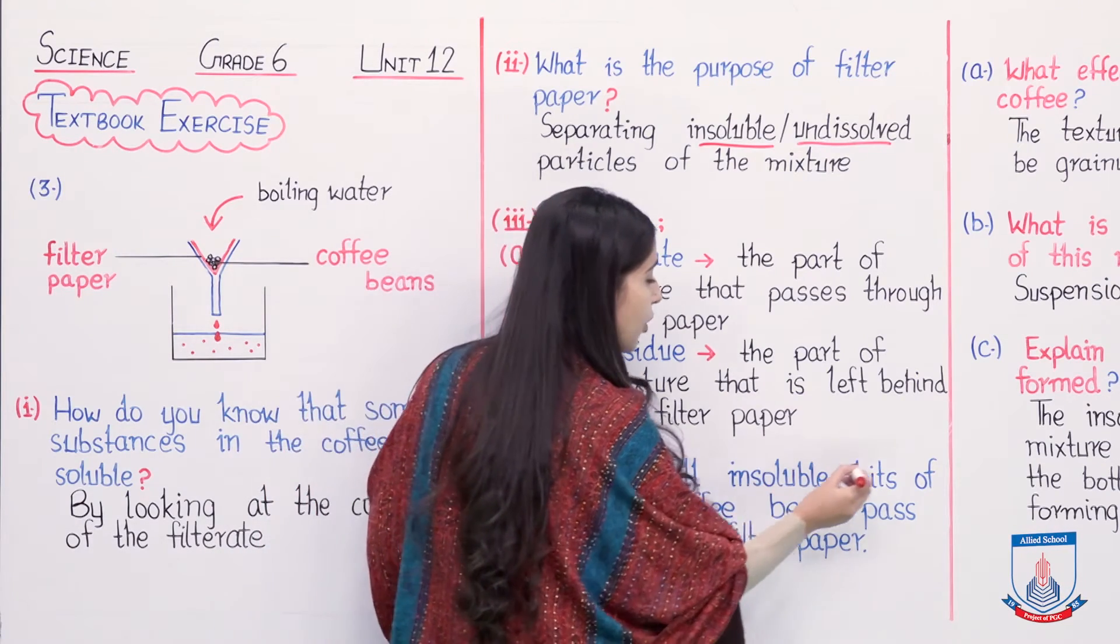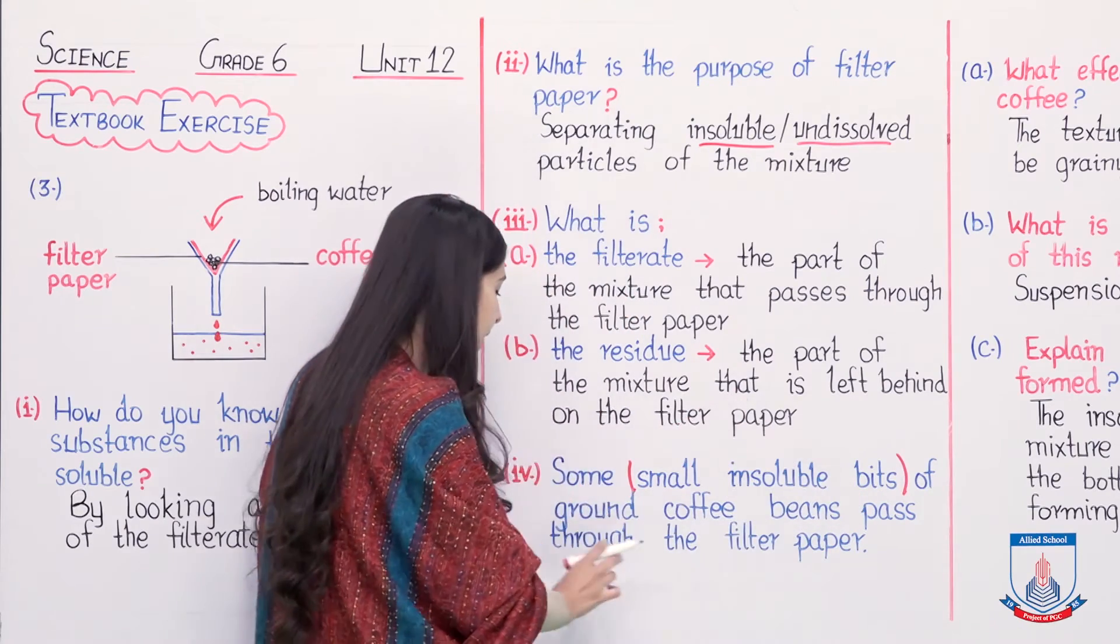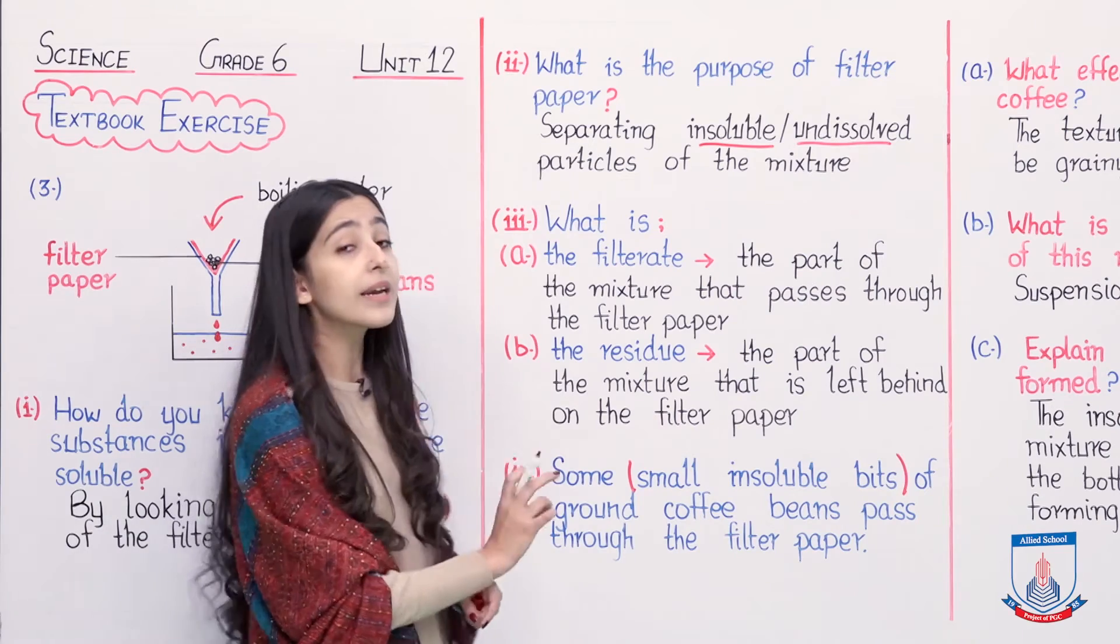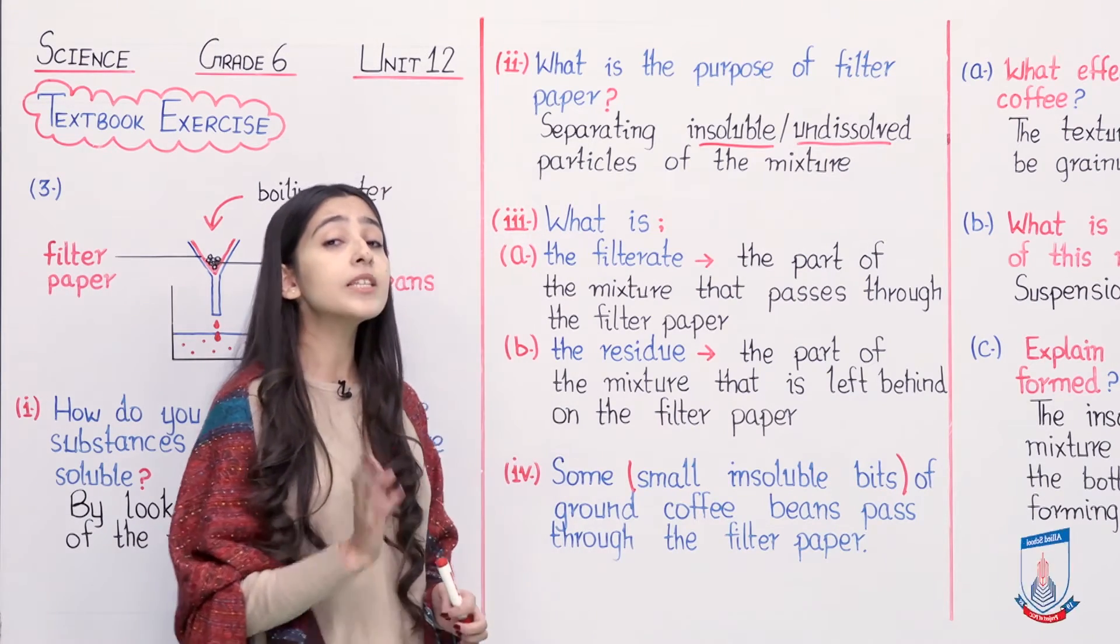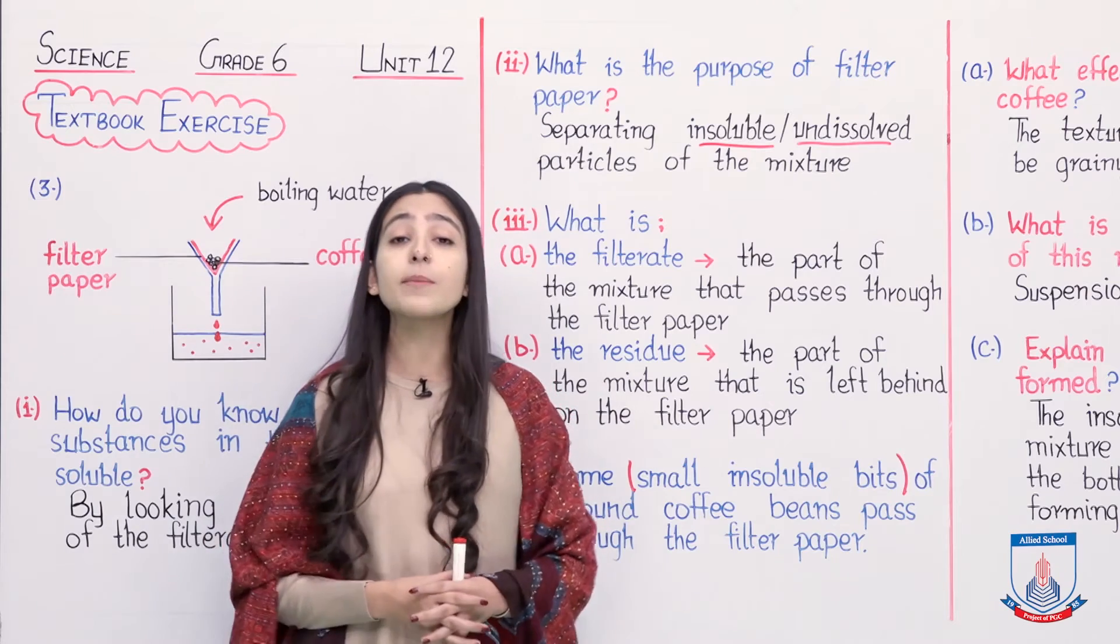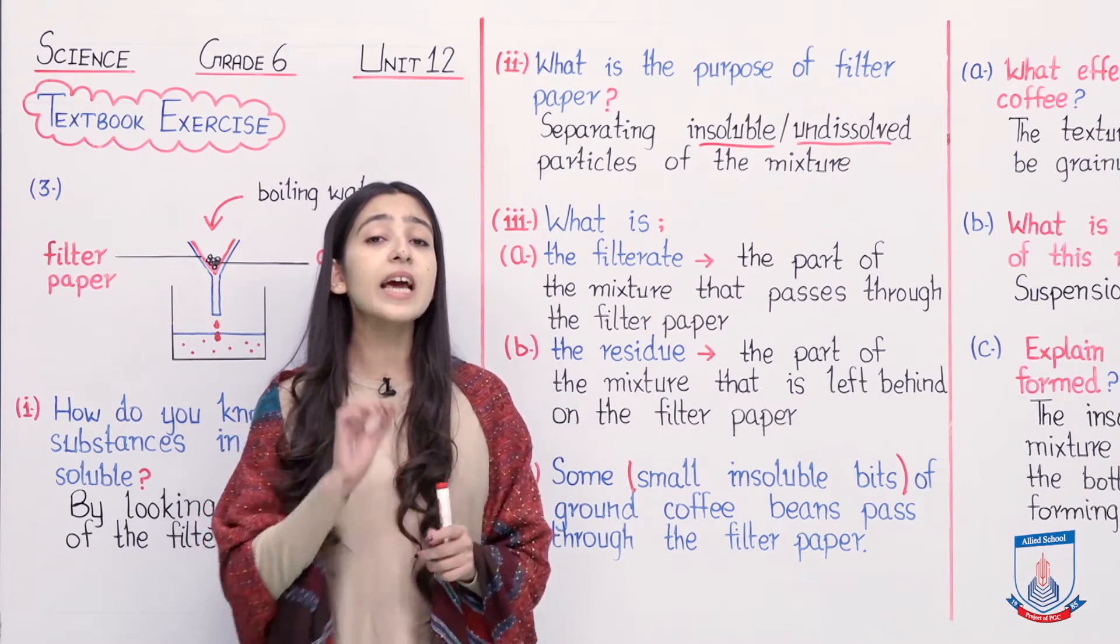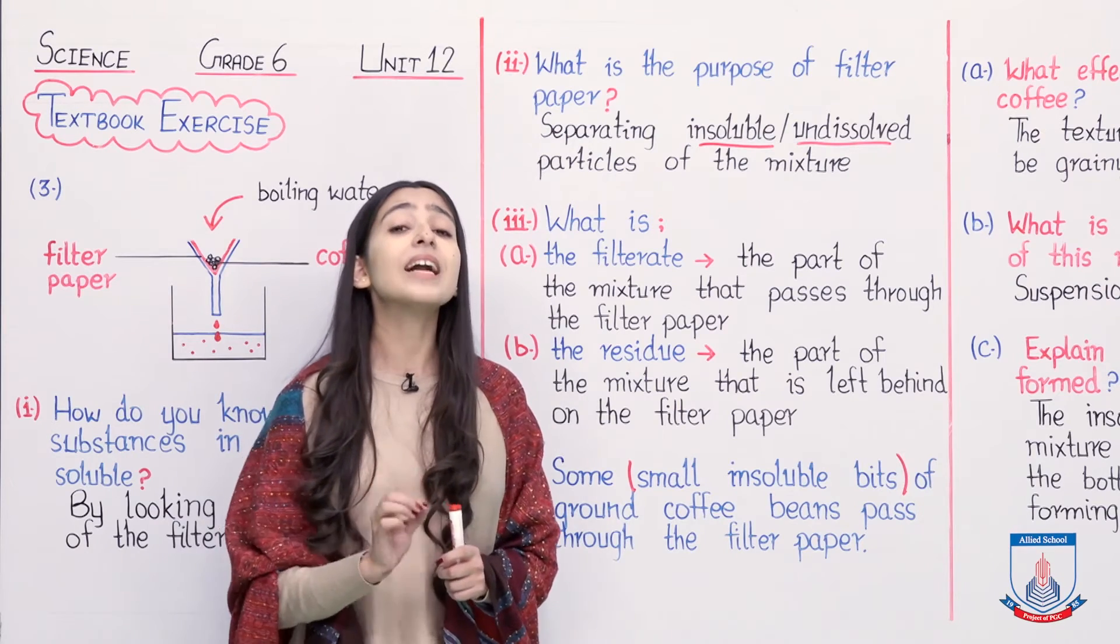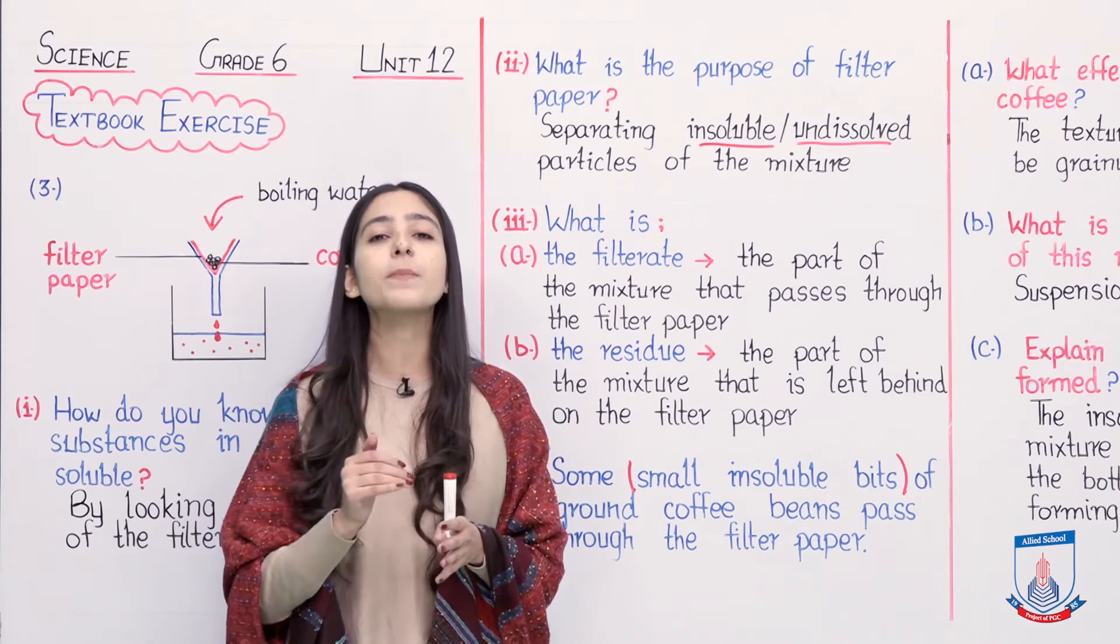Some small insoluble bits of ground coffee beans pass through the filter paper. They have told us that there are small insoluble bits which are small, insoluble, and pass through our filter paper. How do we know? When I looked at my apparatus which I made on the board, I told you that I made the filtrate with red dots.